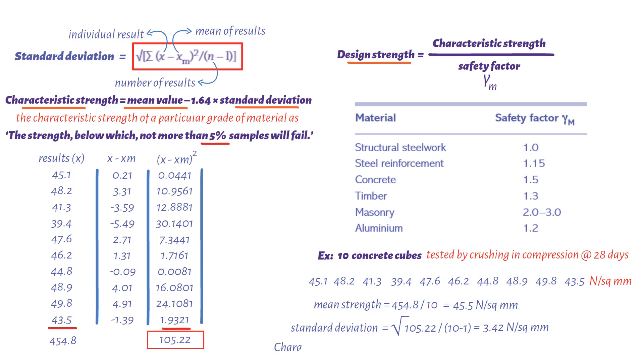So the characteristic strength equals mean strength 45.5 newton per square millimeters minus 1.64 times standard deviation 3.42 newton per square millimeters. This results in a value of 39.9 newton per square millimeters. As a result, the design strength equals 39.9 divided by safety factor 1.5. This gives us a value of 26.6 newton per square millimeters.